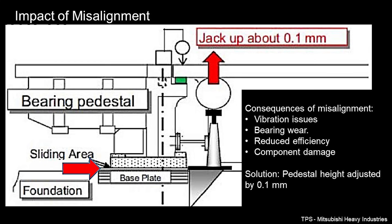So what's the impact of misalignment? Misalignment can cause vibration issues, bearing wear, reduced efficiency, and component damage. To fix this issue, a 0.1 mm adjustment was made to the bearing pedestal to correct the alignment.